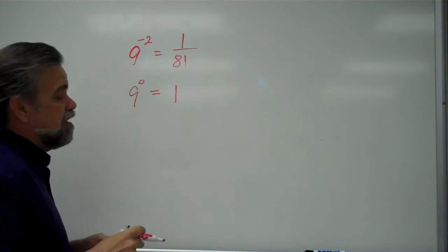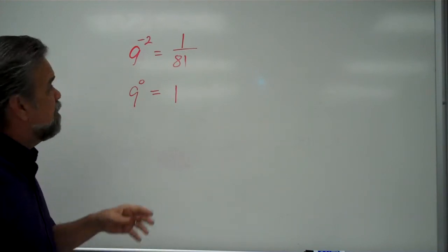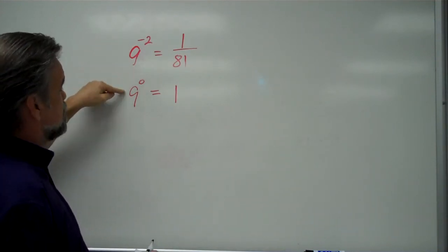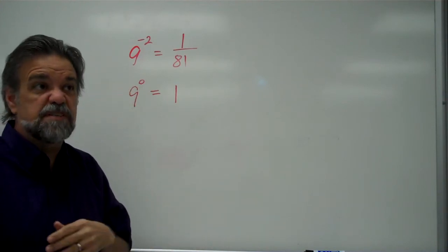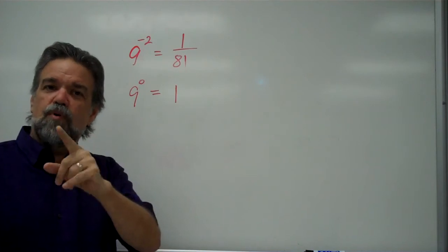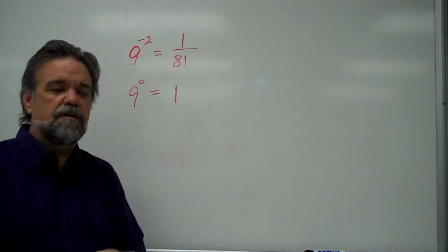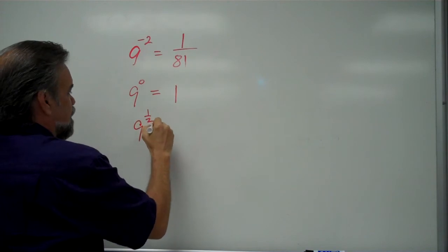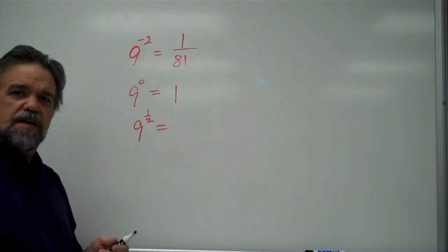And then of course we already knew about positive exponents. So now we know how to interpret negative exponents, 0 exponents, positive exponents, so basically any integer exponent we're cool with. But what about rational exponents? What about 9 to the 1 half power? What does that mean?